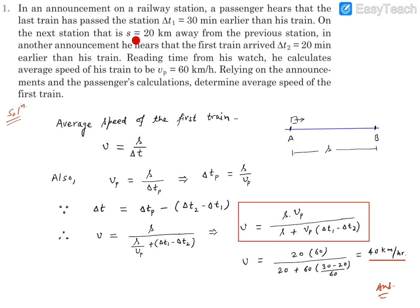On the next station that is S equals 20 km away from the previous station, in another announcement he hears that the first train arrived Delta T2, that is 20 minutes earlier than his train.